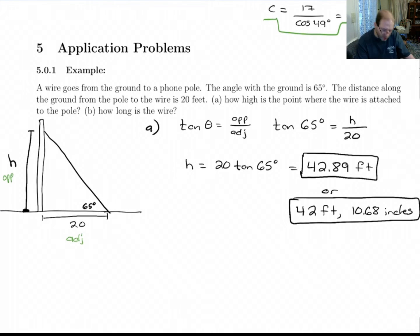Okay, now part B says how long is the wire? Now, I've got a value for h, but I don't want to use it. The values I want to use to answer this are the original two numbers that were given to us. The reason is this is rounded off. Let's use the most accurate numbers we have, which are the 65 and 20. Alright. So for this one, we're dealing with the adjacent side and the hypotenuse. So that's going to be a cosine problem.